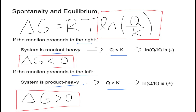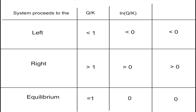Case number three: the reaction is at equilibrium, so Q equals K. When Q equals K, the division in the formula gives us one. The ln of one is zero, so Delta G equals zero.